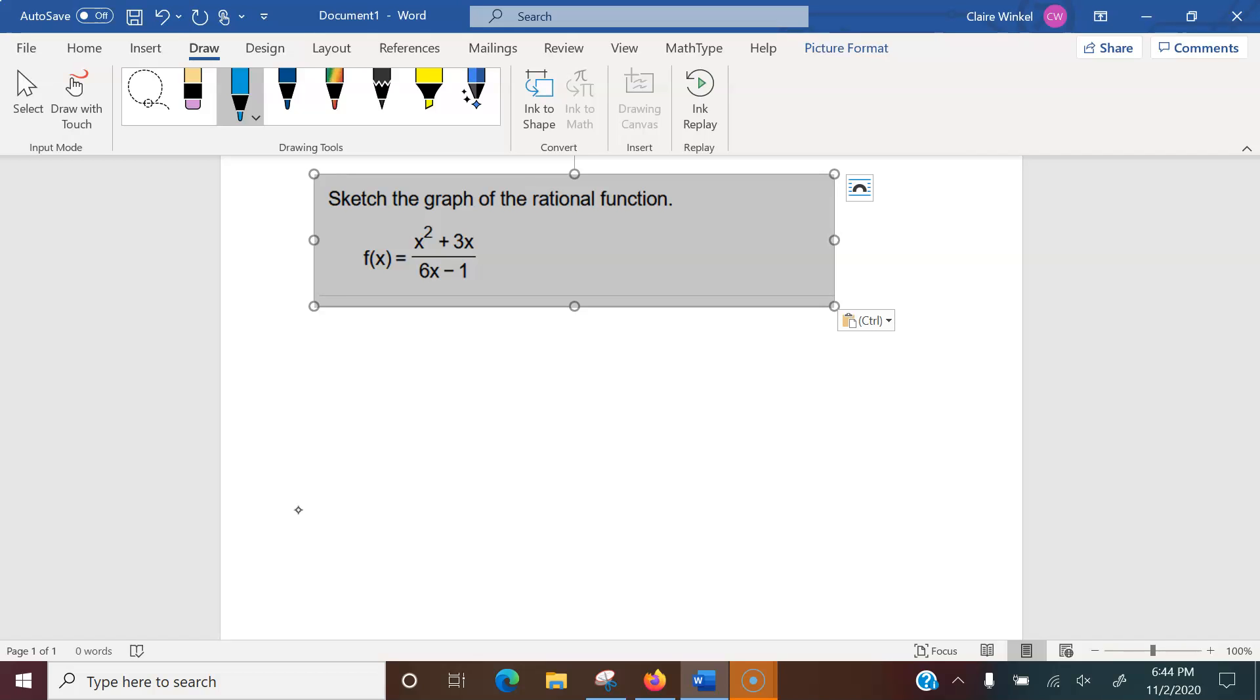For the slant asymptote, because the degree of the numerator is one more than the degree of the denominator, we can find it by doing long division.